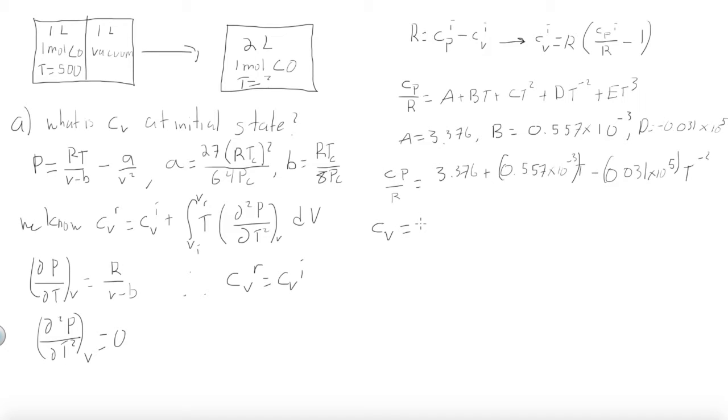Then, using this equation, we can plug this back into the CP equation. So we get the specific heat at constant volume is equal to gas constant R times 3.376 plus 0.557 times 10 to the negative 3 times T minus 0.031 times 10 to the fifth times T to the minus 2, minus 1.